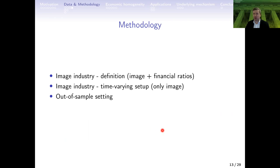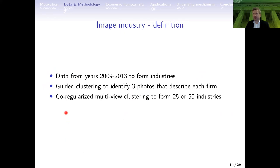Let me now switch to the methodology. There are two main parts: first is the definition of industries, and then time-varying updates. Starting with the definition, we use data from 2009 to 2013. We have a guided clustering algorithm that identifies three photos that best describe each firm — this is one view used to form industries. The other view is financial indicators of these companies. We're trying to get two views simultaneously: one coming directly from photos and the other from financials.